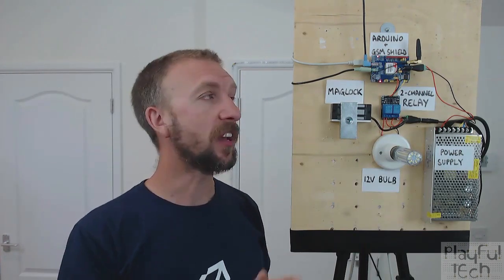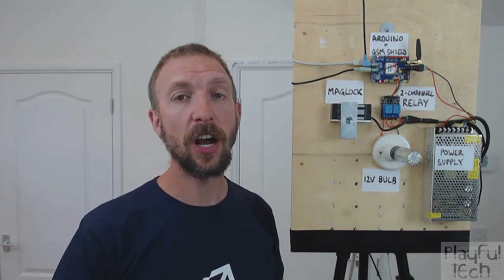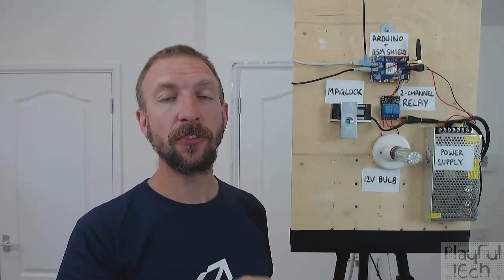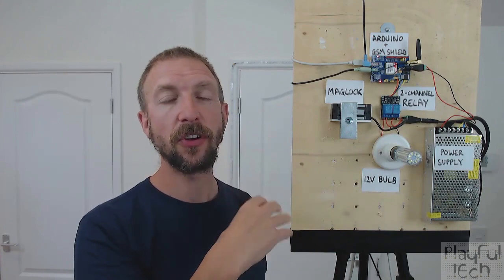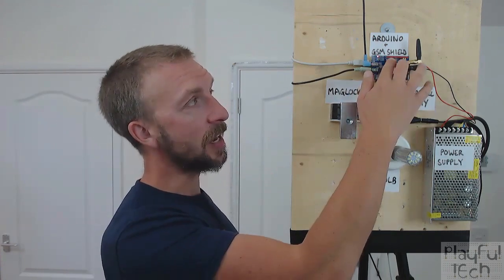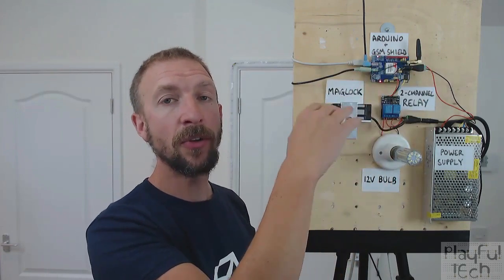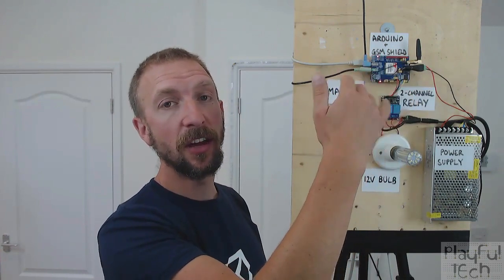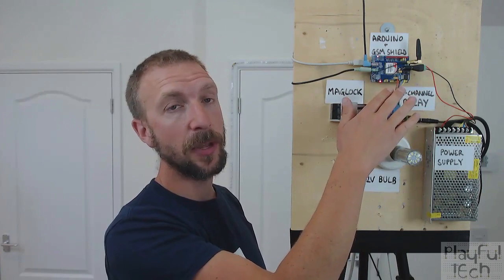Let's take a look in more detail at this GSM shield, because like I say this is really the heart of the project. This is a board that's got the same size as an Arduino Uno and it simply slots right onto the top of it. The pins line up and it does actually have some female header pins on the top of it as well, so any pins that are unused you can plug other components into the Arduino, and that's how I've got the relay board plugged in at the bottom.